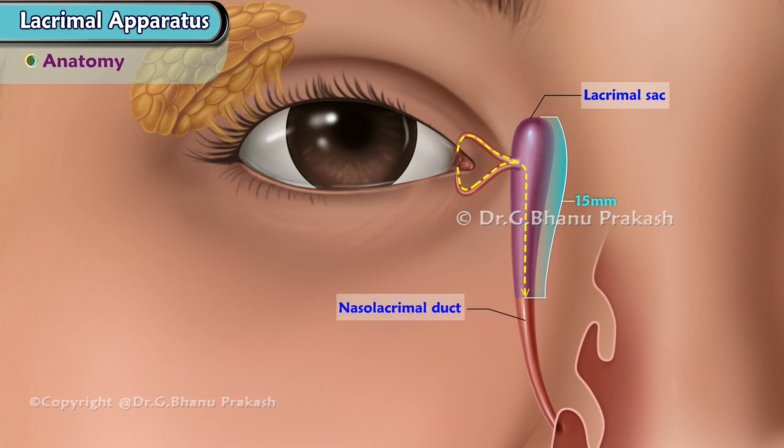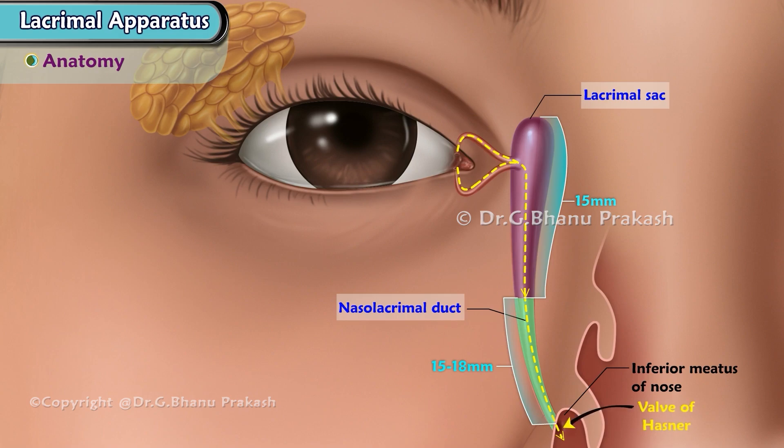Nasolacrimal duct runs from the neck of the sac to the inferior meatus of the nose. It is 15-18 mm long and guarded by the valve of Hasner.